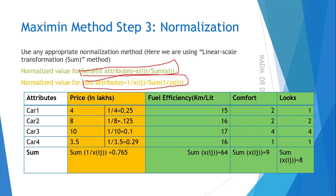We calculate 1/xij only for the cost attribute. For example, 1/4 = 0.25, and so on for each value. To apply the formulas, we need the sum of xij for benefit attributes and the sum of 1/xij for cost attributes. For fuel efficiency (benefit attribute), we need sum of xij. Computing the sums: for comfort, 2+2+4+4+8+1 = relevant totals; for looks, 1+2+3+3+4+7+1 = 8; these sums are then used in the normalization step.